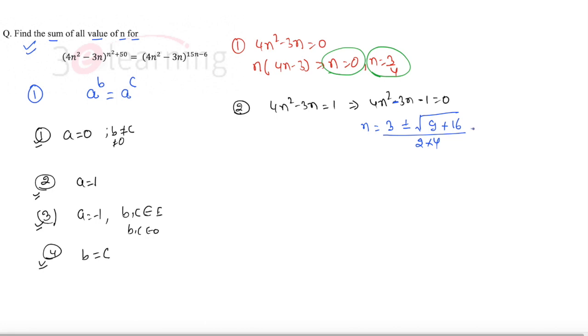From here we can say n = 1 or n = -1/4. So we have two solutions: 1 and -1/4.